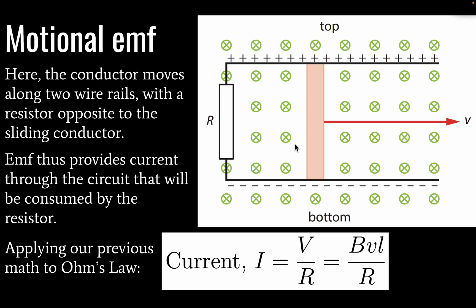If we use Ohm's law we can substitute our value for EMF here and we'll find that current is equal to B times V times L divided by resistance. B is our magnetic field strength, V is the velocity of the conductor. L again is the length of the wire.